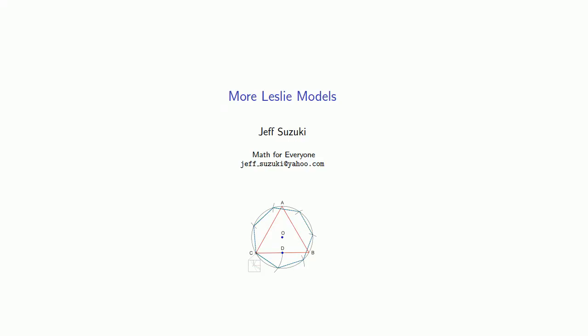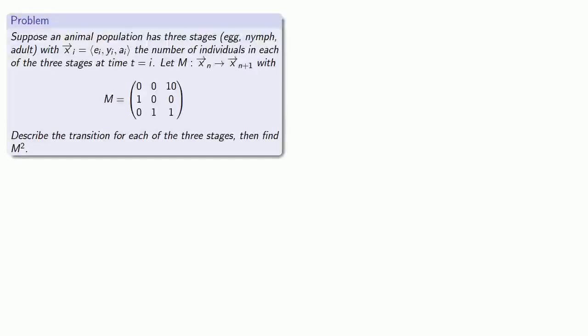Let's take another look at a Leslie model and see what information we can glean from it. Suppose I have an animal population with three stages: egg, nymph, and adult. Our vector gives us the number of individuals in each of the three stages at some time, and our population has a certain transition matrix.